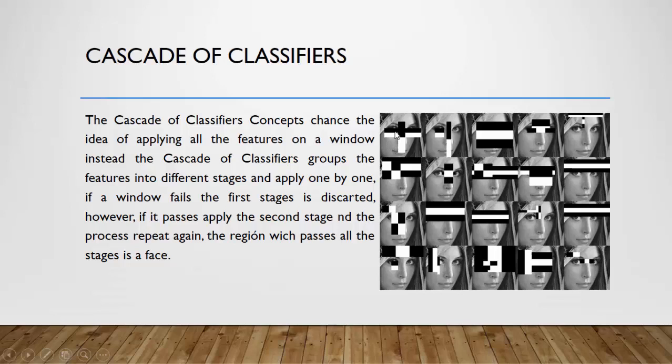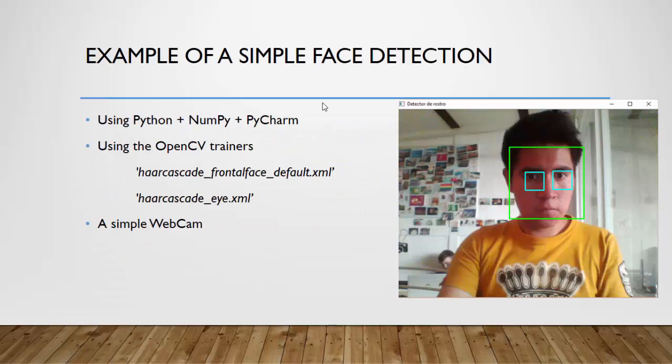For example, if we have an image, if we don't detect in the first stage a face, this region of the image will be discarded. So if all the stages pass, it means that we have here in that region a face. So, an example of that.